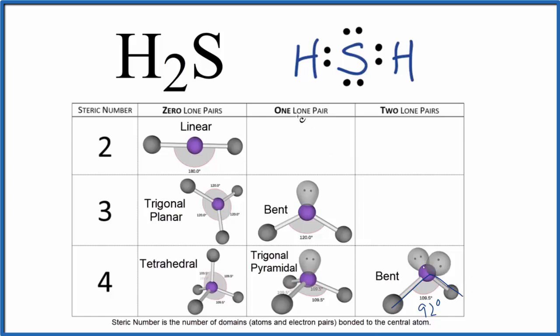We could also figure out the molecular geometry using the AXE notation. A is the central atom, the sulfur. X, the number of atoms bonded. We have two hydrogens. E, the number of lone pairs. There are the two lone pairs. And that would also give you this bent molecular geometry.